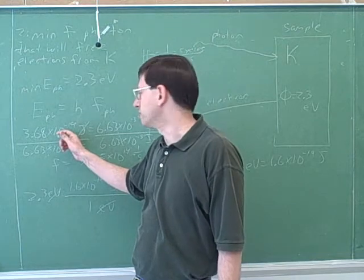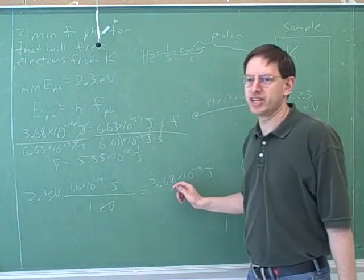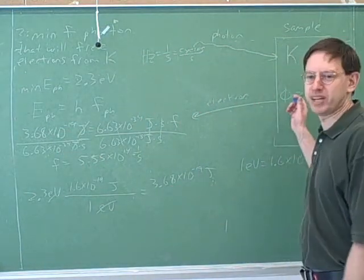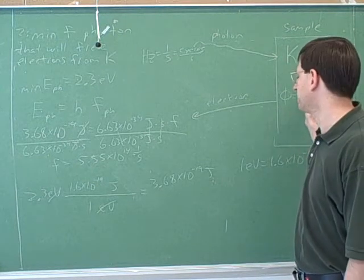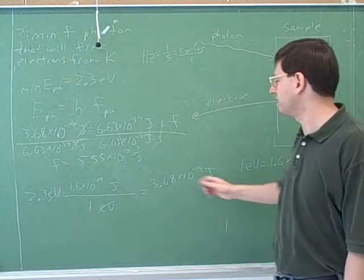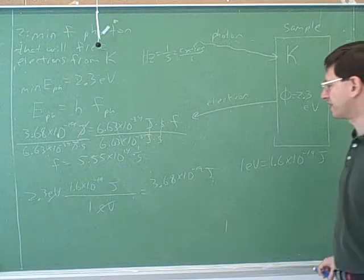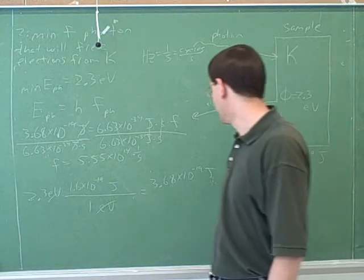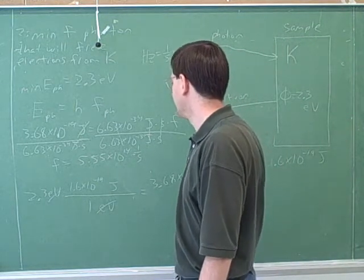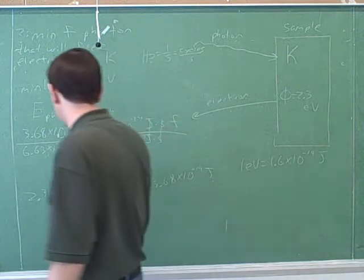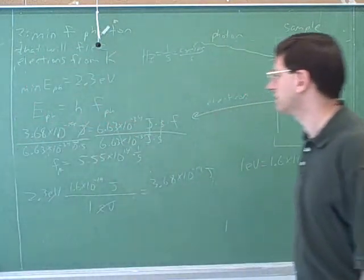You can see why electron volts could be more convenient — this is a nicer, easier number to work with. An electron volt is much smaller than a joule, so it's much more appropriate for the sub-atomic level. And this calculation gave us the frequency of the photon.